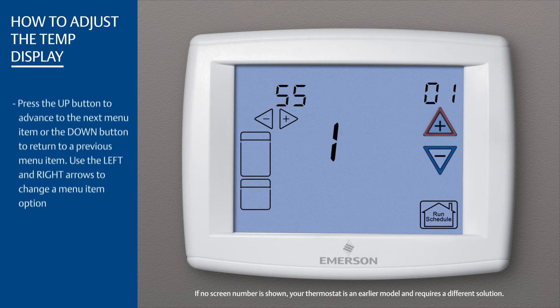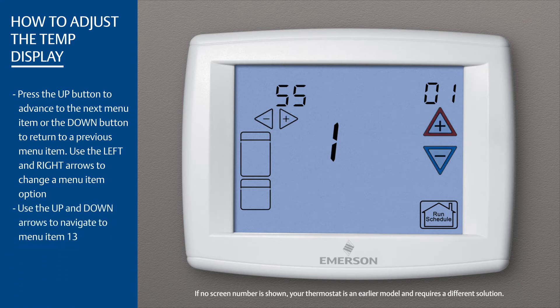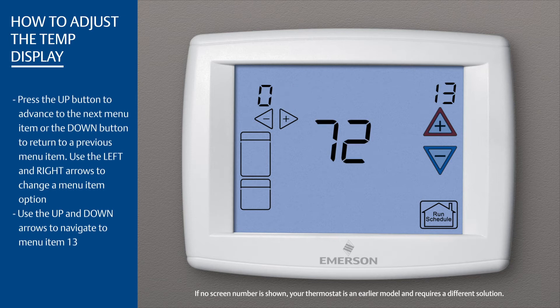Press the up button to advance to the next menu item or the down button to return to a previous menu item. Use the left and right arrows to change a menu item option. Use the up and down arrows to navigate to menu item 13.